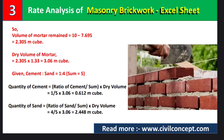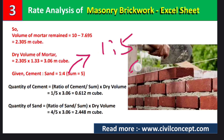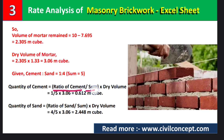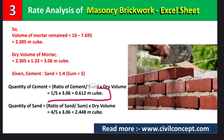The mortar ratio is 1:4 — one part cement to four parts sand — giving a sum of 5. To calculate the quantity of cement, the formula is: (ratio of cement / sum) × dry volume = (1/5) × 3.06 = 0.612 cubic meters of cement.